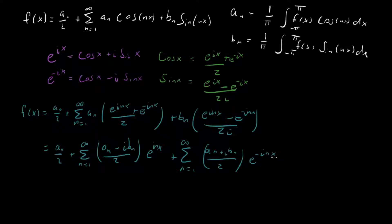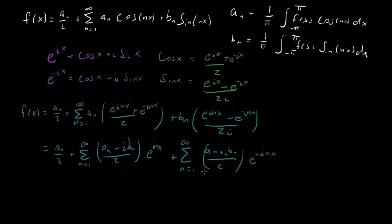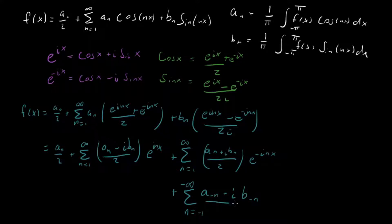Now I'm going to rewrite the sum on the right-hand side. We have e to the inx in the first sum and e to the minus inx in the second. To unify these, we can flip the sign of the summation variable: let n equal minus 1 and change all signs of n. Doing that gives a sum from n equals minus 1 to minus infinity of (a of minus n plus i b of minus n) over 2 times e to the inx.